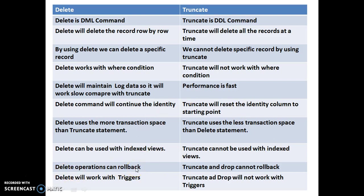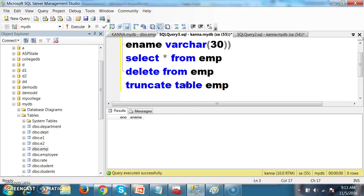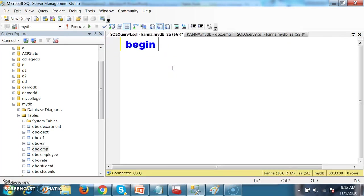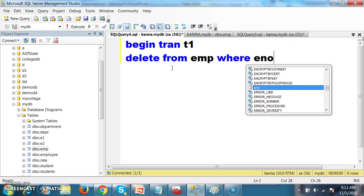Delete operations can be rolled back, whereas truncate and drop cannot be rolled back in the typical sense. We already know about commit and rollback. Commit is used to save changes permanently. Whenever we perform any transaction, those transactions will not be saved until you commit. If you want to undo the transactions, you rollback. For example, if you delete a record from the table, after deleting you can rollback. I will show you — begin transaction T1, delete from EMP where E number equals 101.